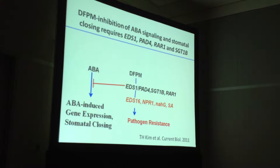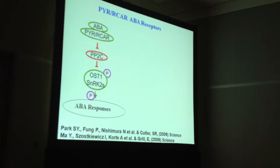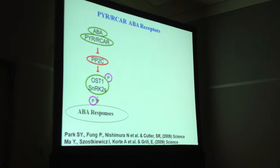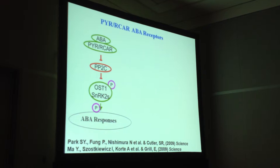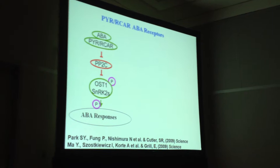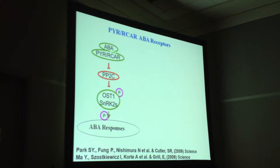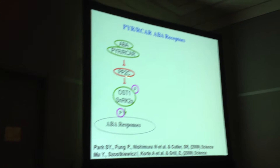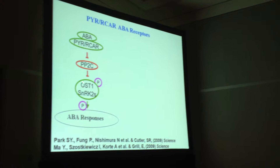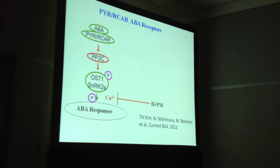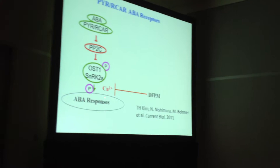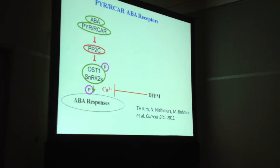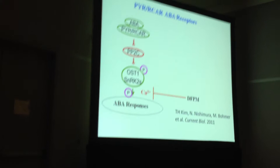So, where is ABA signaling impaired? This shows the beautiful work of Sean Cutler and collaborators on the new paradigm for early ABA signaling. We looked at biochemical mechanisms known for PP2Cs and SNRK kinase regulation, and ABA activation of these biochemical mechanisms is not impaired by DFPM. We did further experiments and found that DFPM affects calcium signaling, which acts roughly at this level in the pathway.